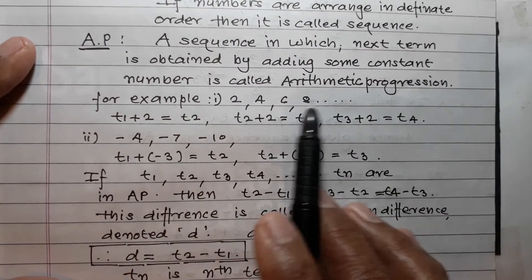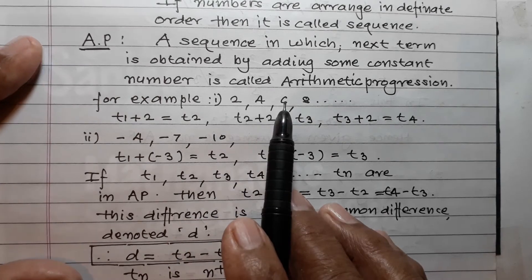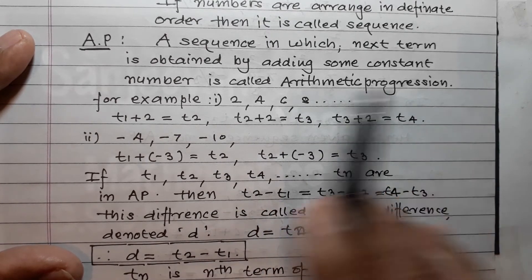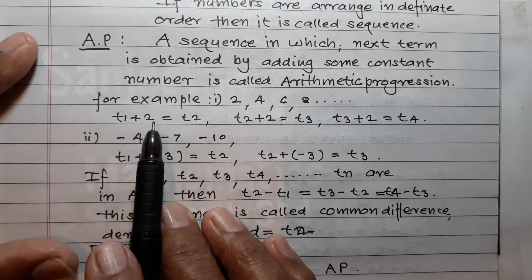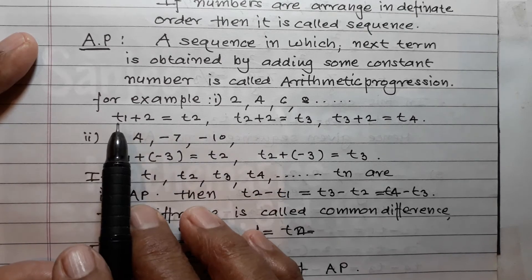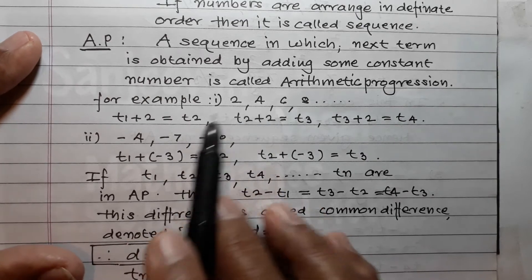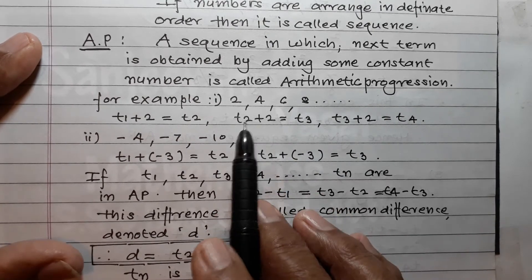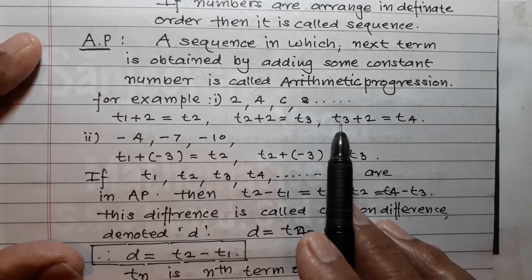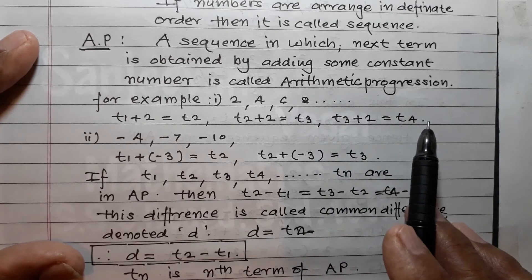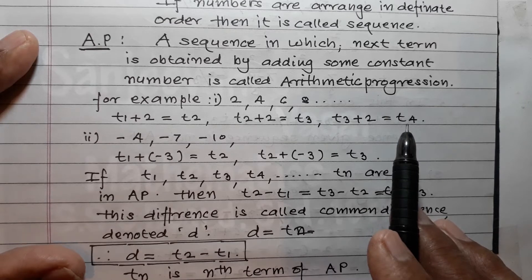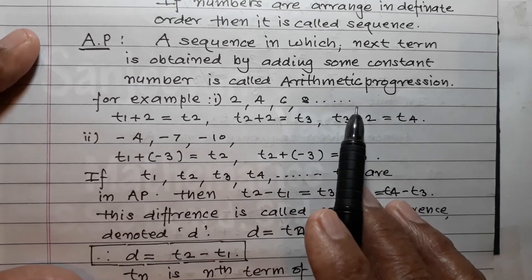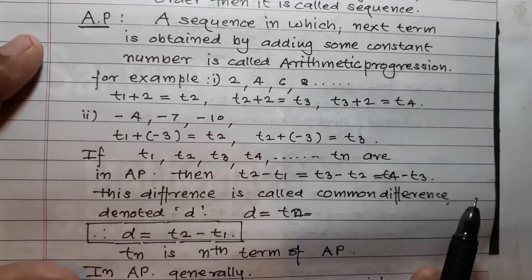For example: 2, 4, 6, 8. These are the first, second, third, and fourth terms. t1 = 2; add 2 to get t2 = 4. t2 + 2 = t3, so 4 + 2 = 6. t3 + 2 = t4, so 6 + 2 = 8. After adding 2 each time you get the next term, so this sequence is an AP.